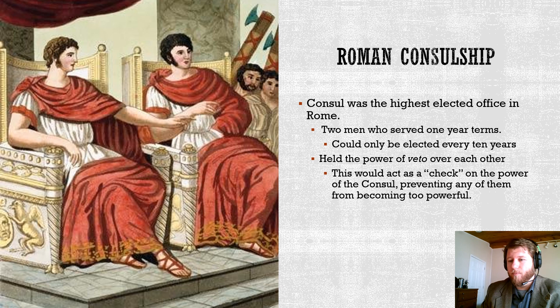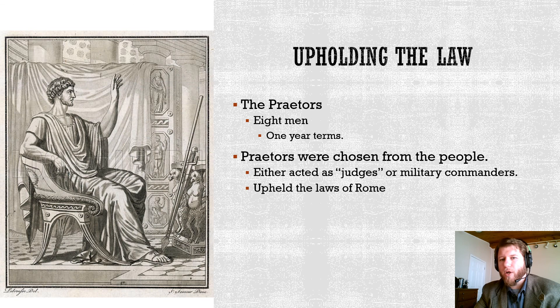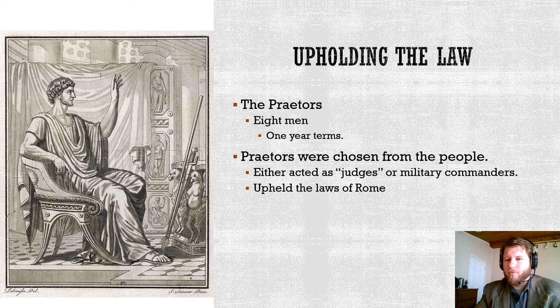That's the same reason we chose that style of government as well. What did we fight a war against? The American Revolution was against the king of England. Opposed to kings — go the republic. The praetors are kind of like the judicial branch: eight men, also serving one-year terms, chosen from the people. They're like judges-slash-commanders with a flexible position, and they are the ones responsible for upholding the laws of Rome.